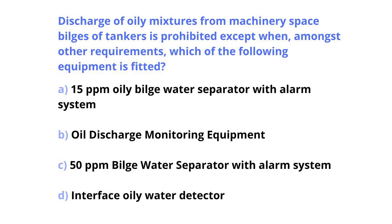Discharge of oily mixtures from machinery space bilges of tankers is prohibited except when, amongst other requirements, which of the following equipment is fitted? A: 15 ppm oily bilge water separator with alarm system. B: Oil discharge monitoring equipment. C: 50 ppm bilge water separator with alarm system. D: Interface oily water detector.